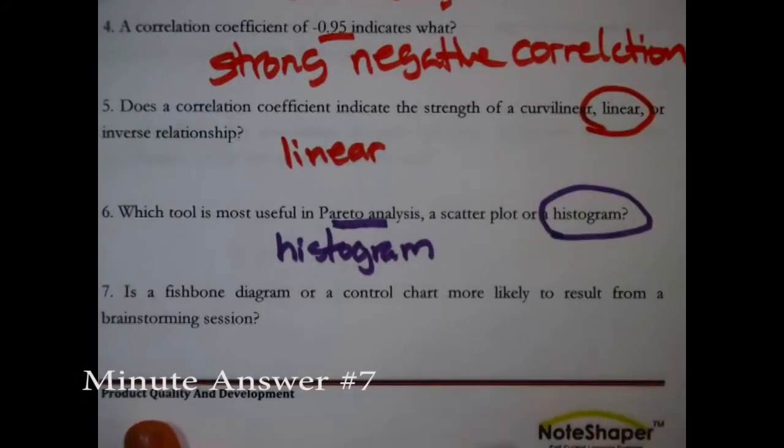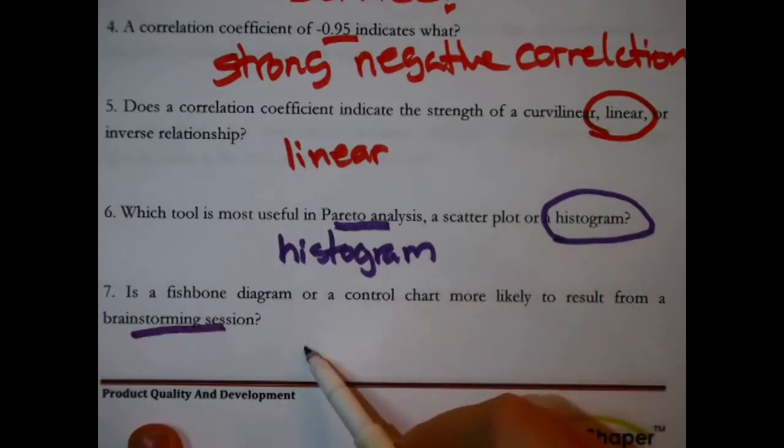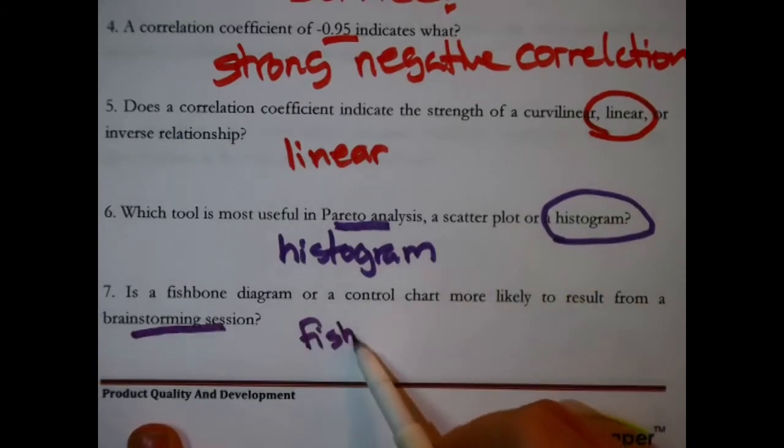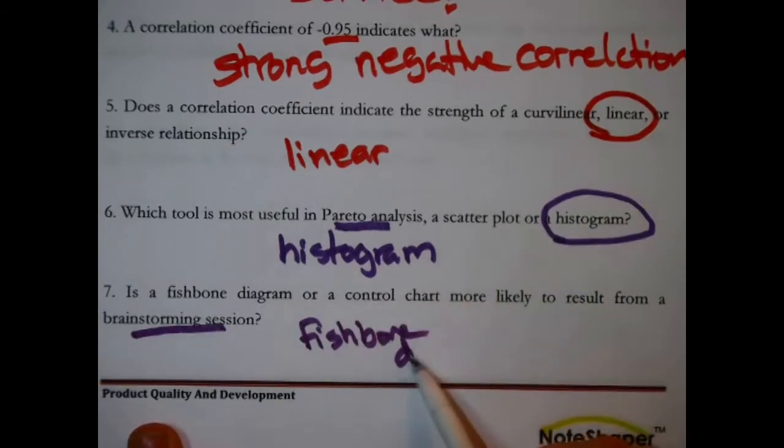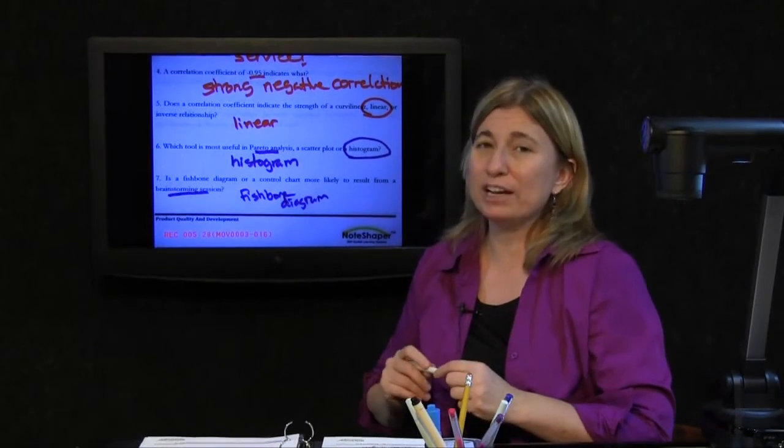Is a fishbone diagram or control chart more likely to result from, the key is, brainstorming session? The answer is the fishbone diagram. Fishbone diagram, also known as a cause and effect diagram, is a brainstorming tool.